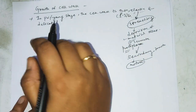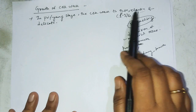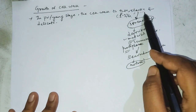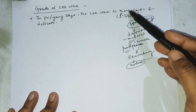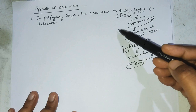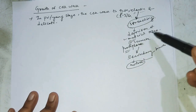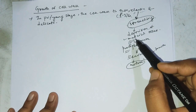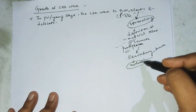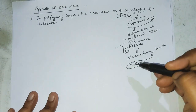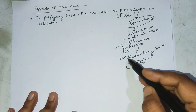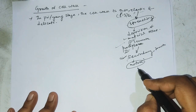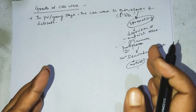In the primary stage, the cell wall is thin, elastic, and delicate. Due to its elastic nature, the cell wall starts to grow and becomes stretched. Because of stretching, deposition of material occurs, done by the protoplasm. Then the cell enters the secondary stage, becoming mature. Cell wall thickness increases in secondary or mature condition.